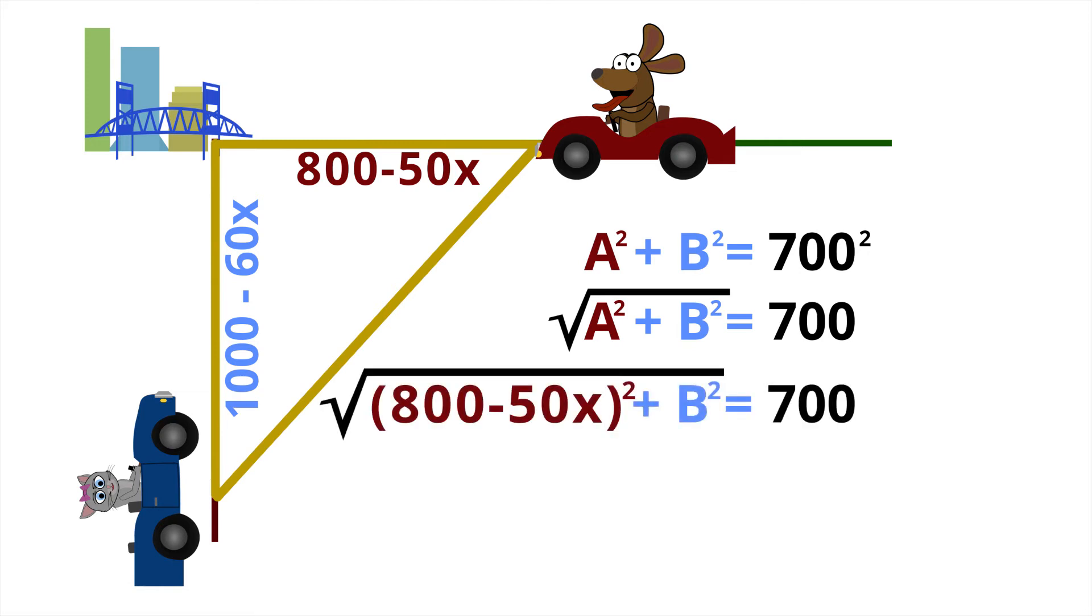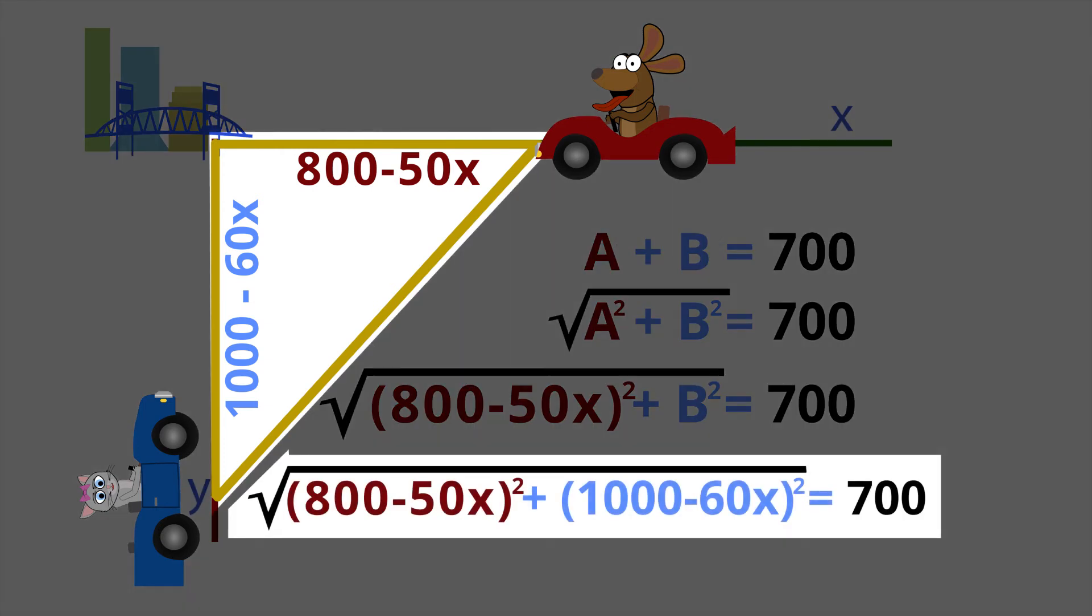So 700 is going to equal the square root of the distance at any given time of A squared, plus we have the square of the distance of car B which is going to be 1,000 minus 60x squared, and this is going to equal 700 miles.